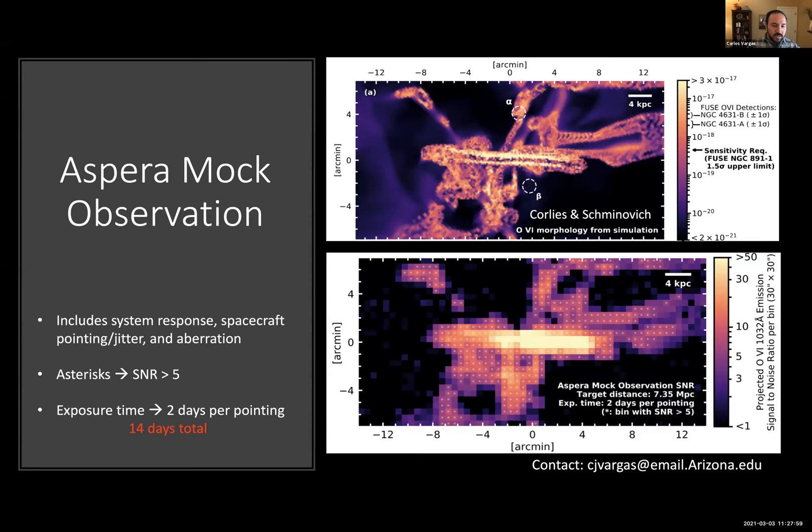And on the lower right-hand side here is the actual result of that mock observation. So in building about two days per pointing, in a total of 14 days, we'll be able to build this map on the lower right-hand side for a nearby galaxy at redshift of zero. Each asterisk, or each pixel that has an asterisk within it has a signal to noise greater than five. So we'll be able to measure all these kinematics, since of course we are a spectrograph, measure the kinematics of the O VI extents and morphologies that track the morphological structure sizes that we see in the simulations. So we're very excited for this.